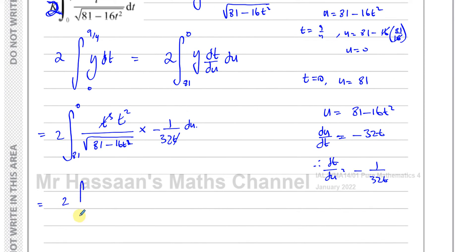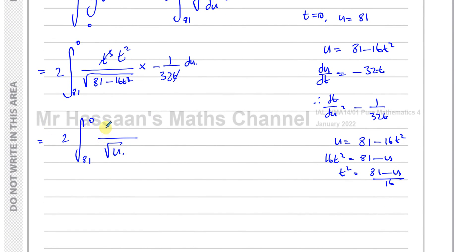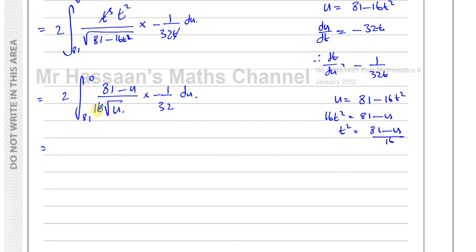Everything is now in terms of u. I have 2 times the integral from 0 to 81 of (81 − u)/16 over √u times −1/(32) du. Taking the constants out: 2 × (−1/16) × (−1/32)... the two minus signs and the 2 give minus 2 over 16 × 32. Simplifying 16 × 32 = 512, so I get −2/512 = −1/256 outside the integral.